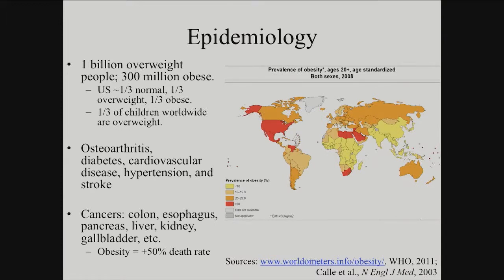In the United States, a third of the population is overweight, a third is obese, and a third is normal. You guys live in a college environment with a lot of young people, so you probably don't see that reflected here. But in the general US population, this is very true and actually very disturbing. A third of children worldwide are overweight — that's not good, because if you're overweight as a child, your odds of being overweight or obese as an adult really multiply. This is not only a serious problem now, but it poses to be a serious problem going forward.